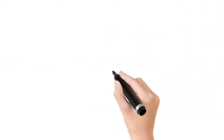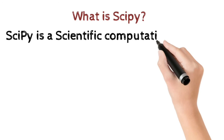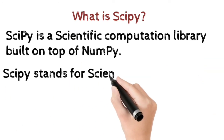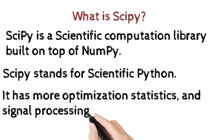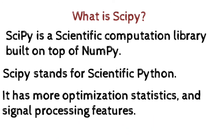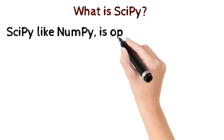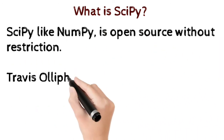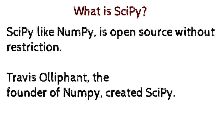So what is SciPy? SciPy is a scientific computation library built on top of NumPy. SciPy stands for Scientific Python. It has more optimization, statistics, and signal processing features. SciPy, just like NumPy, is open source, which means we can use it without restrictions. Travis Oliphant, the founder of NumPy, also created SciPy.